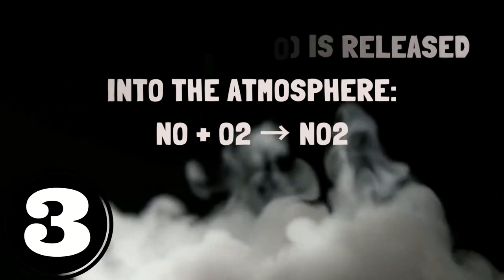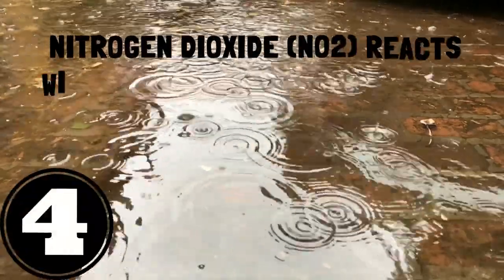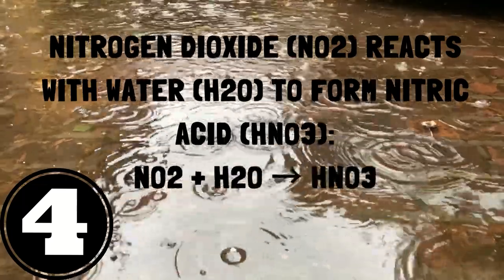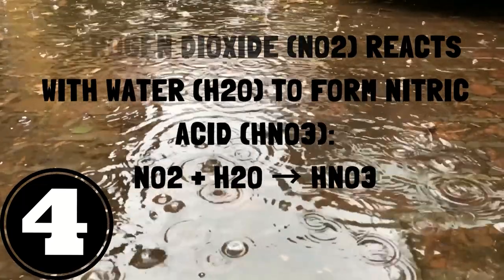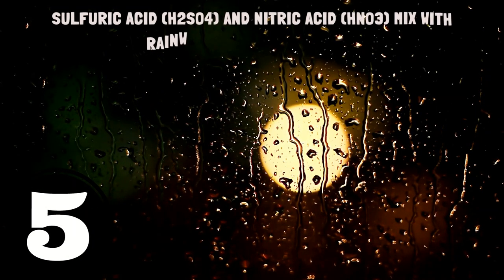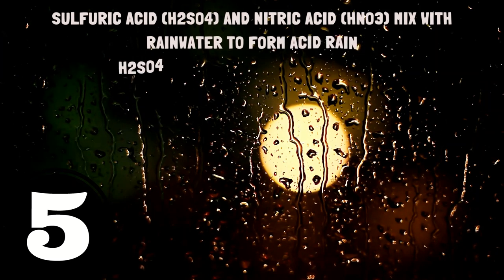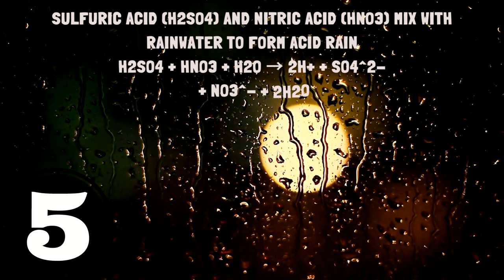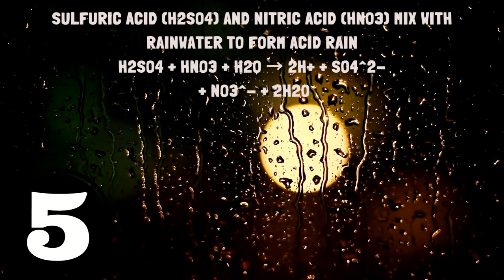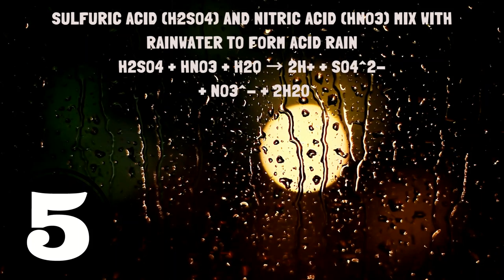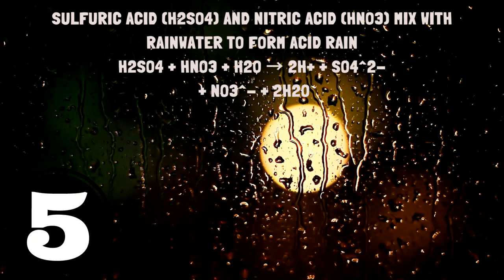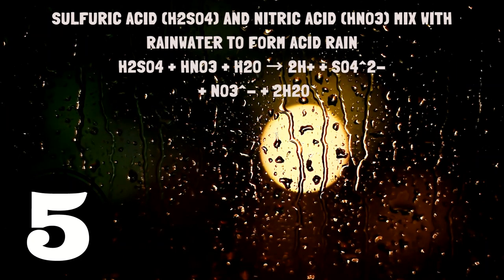Number three, nitrogen oxide (NO) is released into the atmosphere; NO reacts with O2 to form NO2. Number four, nitrogen dioxide (NO2) reacts with water (H2O) to form nitric acid (HNO3). Number five, sulfuric acid (H2SO4) and nitric acid (HNO3) mix with rainwater to form acid rain, yielding hydrogen ions, sulfate ions, nitrate ions, and water molecules.